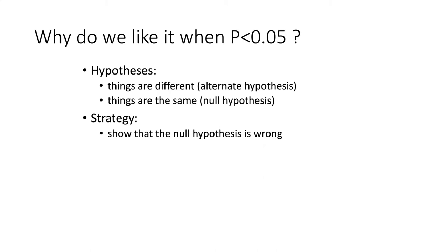So the overall strategy is to determine between these two hypotheses that things are different or that things are the same by showing that the null hypothesis is wrong. It always seemed to me that this was sort of an odd and backwards way of doing things. Like, why isn't it that we are trying to show that the things are different instead of trying to show that they're the same and then rejecting that? It just seems kind of weird.